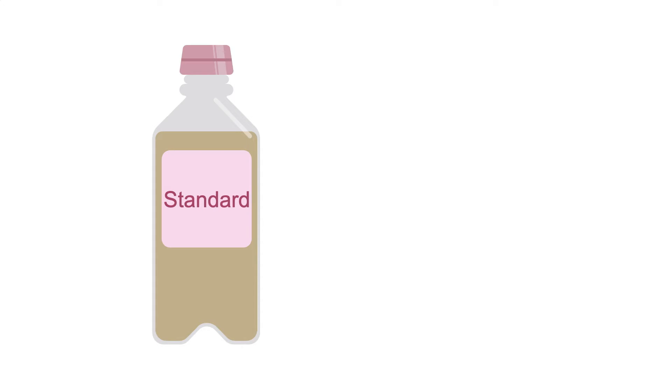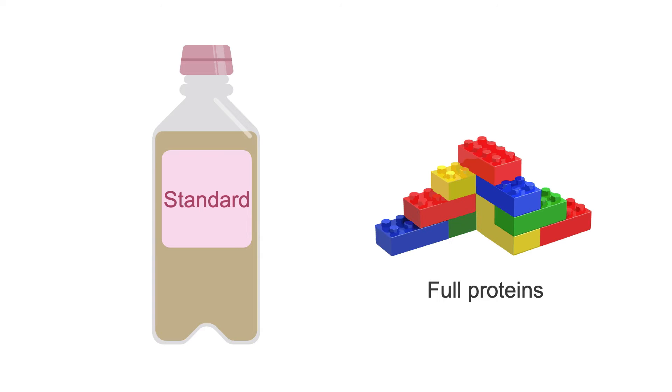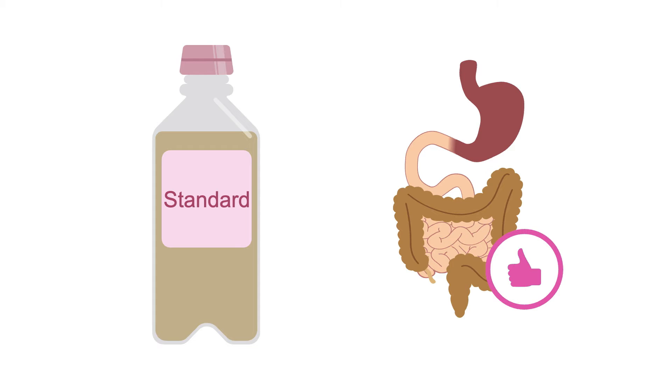The next thing to consider is the degree of digestion the formula needs before absorption. Patients with digestive or absorptive issues may need tube feeds that have been pre-digested, making them gentler on their GI tract. There are three degrees of macronutrient digestion to cover. The first is standard or polymeric — this type of formula contains full proteins which haven't been enzymatically broken down. Standard formulas are the most common type of tube feeds and should be chosen for patients with normally functioning digestive tracts.